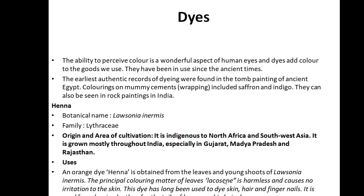Henna leaves, shoots, and the compound lawsone are cut and used as paste. The principal coloring matter consists of lawsone, a chemical compound that is harmless and causes no irritation on the skin. It is used for coloring skin, hair, and fingernails, as well as coloring leather and as hair dye. We use it in cosmetics.